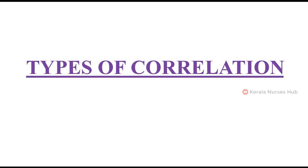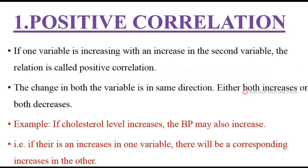The first type is positive correlation. As the name indicates, if one variable is increasing with an increase in the second variable, this type of relationship is known as positive correlation. The change is happening in the same direction — either both variables will increase or both will decrease. For example, if the cholesterol level increases, blood pressure also increases. If there is an increase in one variable, there will be a corresponding increase in the other variable.